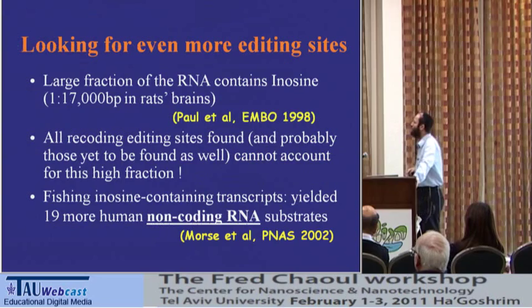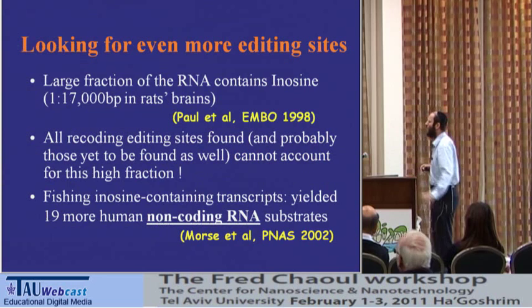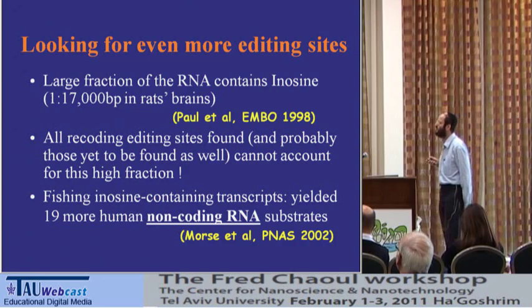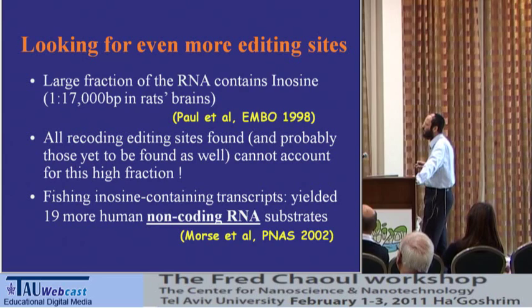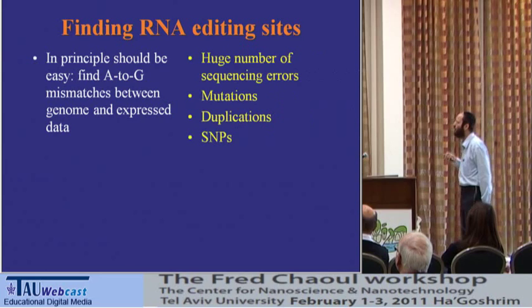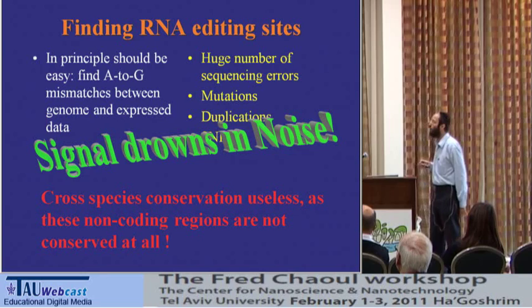However, this is not enough. As mentioned before, we have one inosine per 17,000 base pairs in brain RNA — far too large a number to be explained by 40 or 50 or even 100 editing sites. We knew that there should be more, and probably most of them are in non-coding parts of the RNA. Conservation does not help when looking for non-coding regions, since they are not well-conserved between species. So we need another feature.